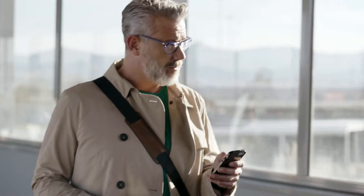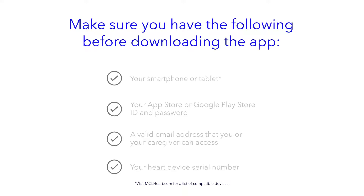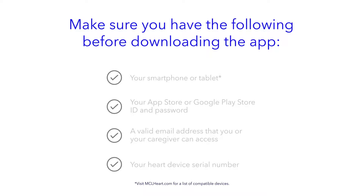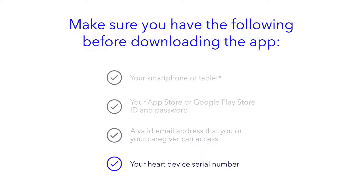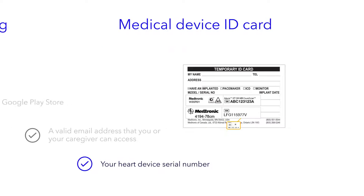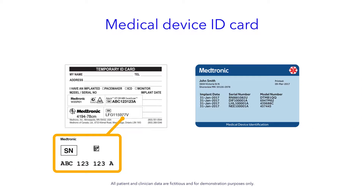Before you download the MyCareLink heart mobile app and connect it with your heart device, make sure you have the following items: your smartphone or tablet, your App Store ID and password, a valid email address that you or your caregiver can access, and your heart device serial number. The serial number can be found on your medical device ID card provided to you by your clinic.